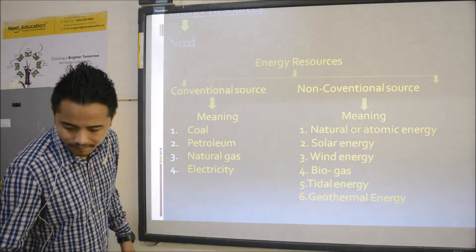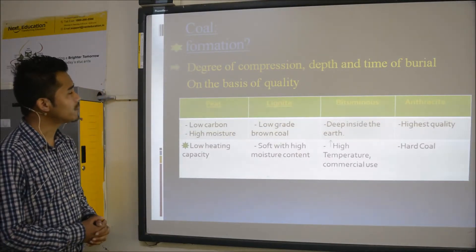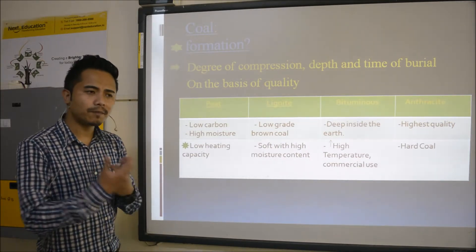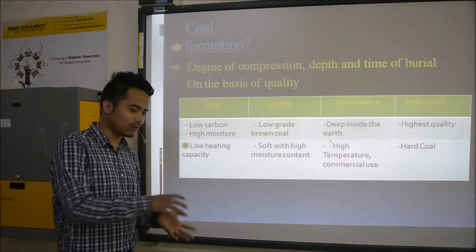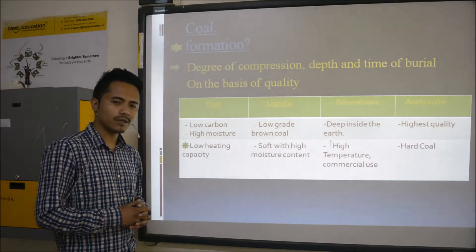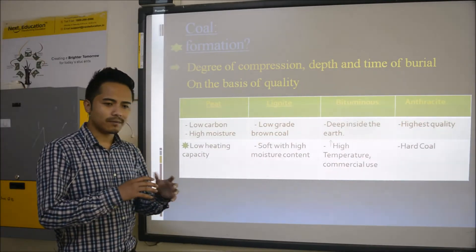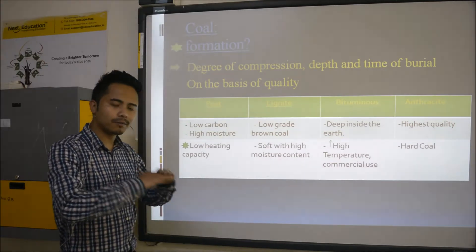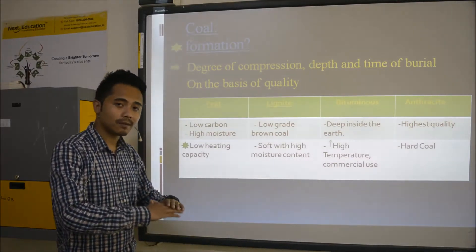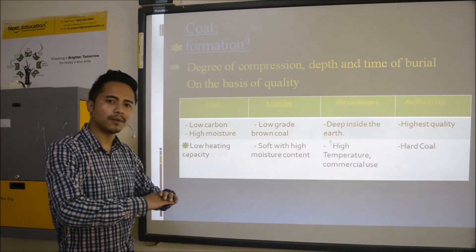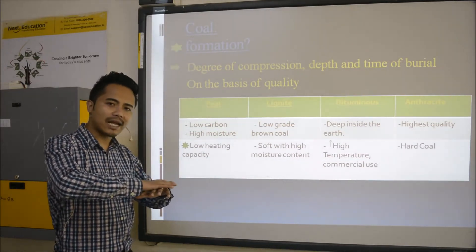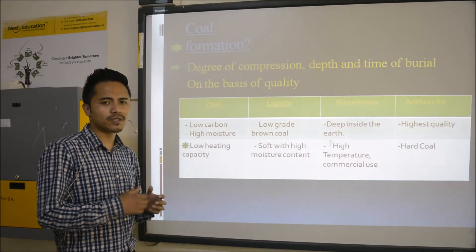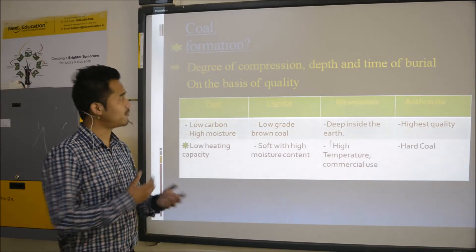Let's talk about coal. How is coal formed? When plants fall to the ground, slowly over time, different layers of soil bury those plants. Slowly they get compressed — the pressure of the soil and land makes them compressed. And as they get buried deeper and deeper, slowly there is a formation of coal. It takes lots of years for coal to form.